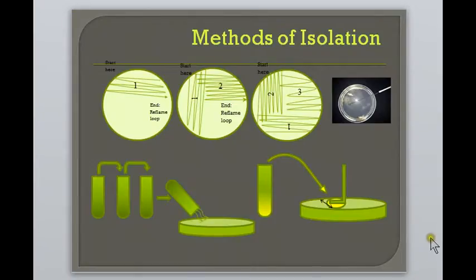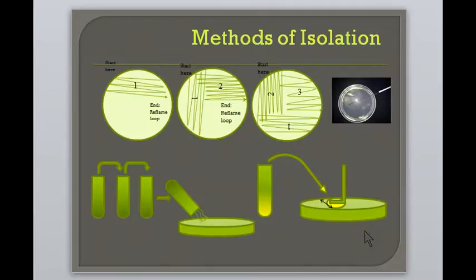In the pour plate method, a serial dilution method is used by diluting the specimen with each subsequent tube of broth. These tubes are then poured into a petri dish and allowed to cool so the agar will solidify. Colonies will grow throughout and on top of the media. In the spread plate method, a known amount of broth containing the specimen is distributed across an agar plate using a spreader. This dilutes the specimen across the surface of the plate.